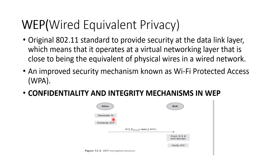The ICV is the integrity check value calculated for the data. This is encrypted using the key and sent to Bob. When Bob receives it, he decrypts using the key. After decrypting, Bob receives the data and the ICV. Bob then recalculates the message authentication code for the received data and compares it with the received ICV. If they match, integrity is preserved.